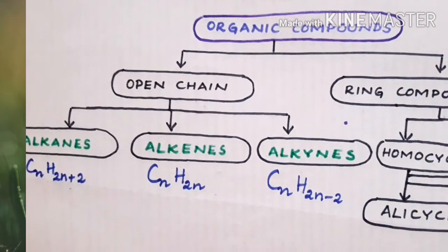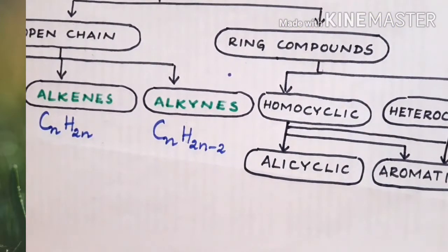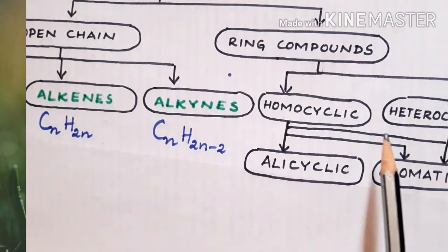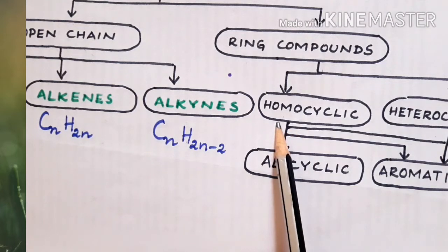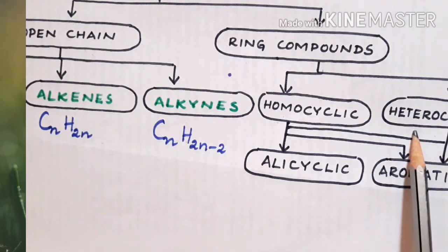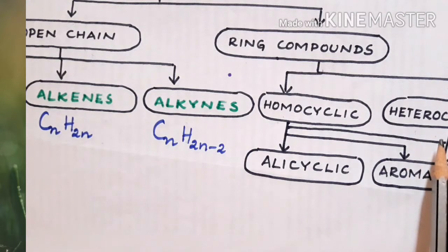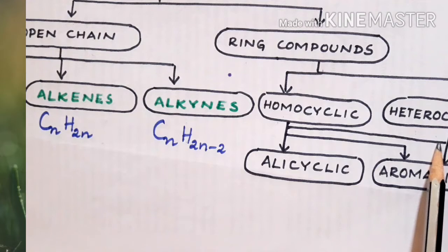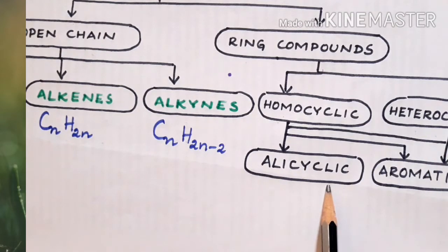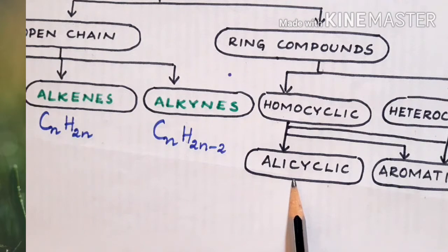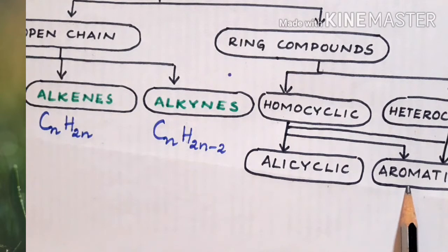Coming to the ring compounds. Ring compounds can be of two types, that is homocyclic as well as heterocyclic. Homocyclic compounds are those which contain carbon and hydrogen in them, whereas heterocyclic compounds may also include some heteroatoms like nitrogen, oxygen, sulfur, etc. Both these homocyclic and heterocyclic compounds can be either alicyclic or aromatic. Alicyclic will behave like aliphatic compounds with no unsaturation in the compound, whereas aromatic compounds are having unsaturation in it and they have strong aroma.